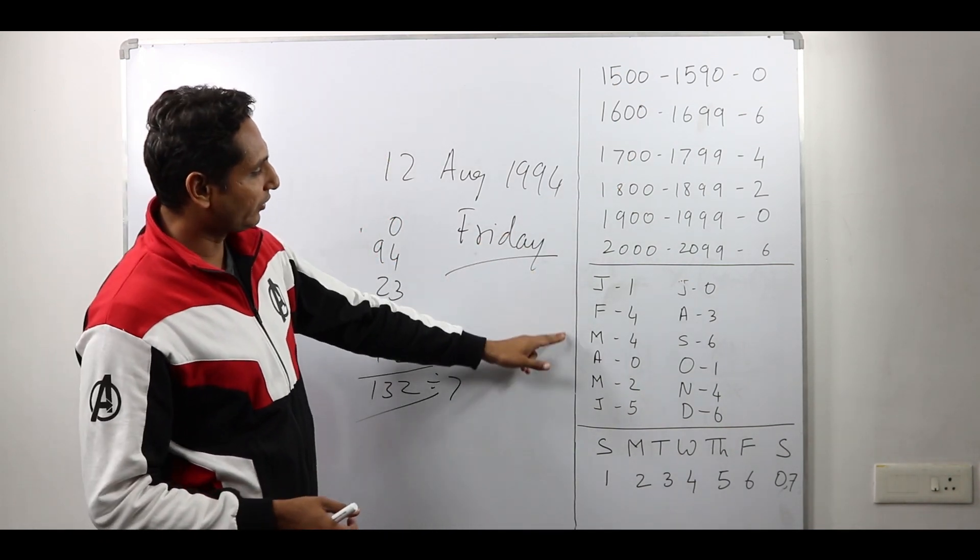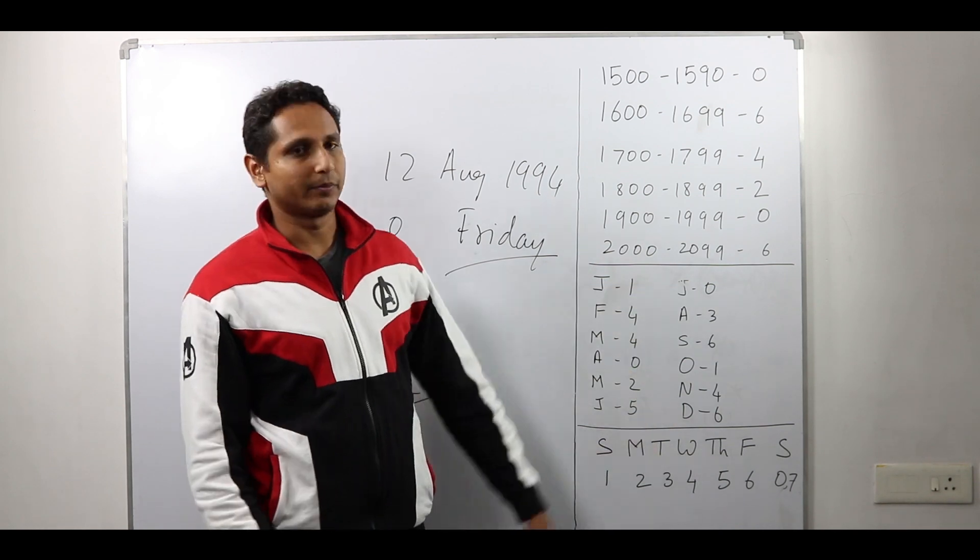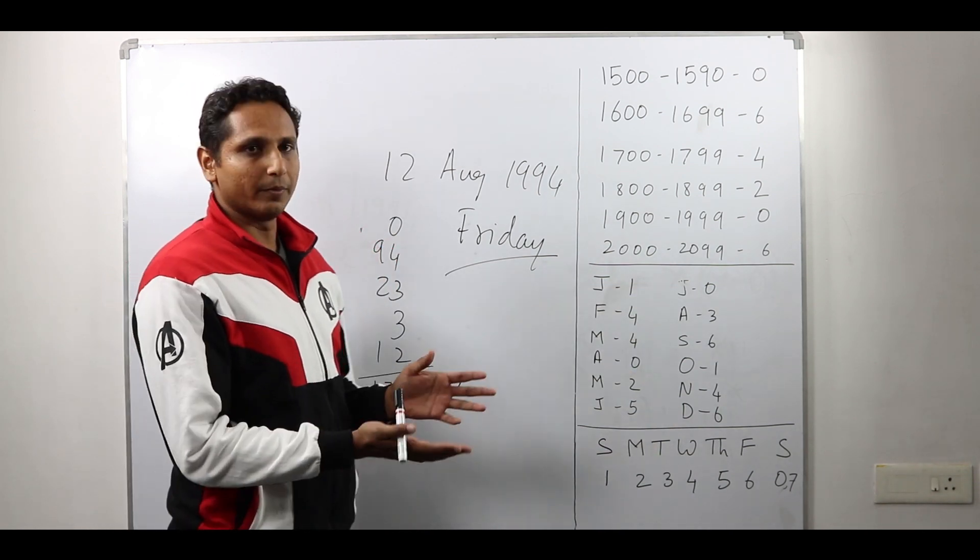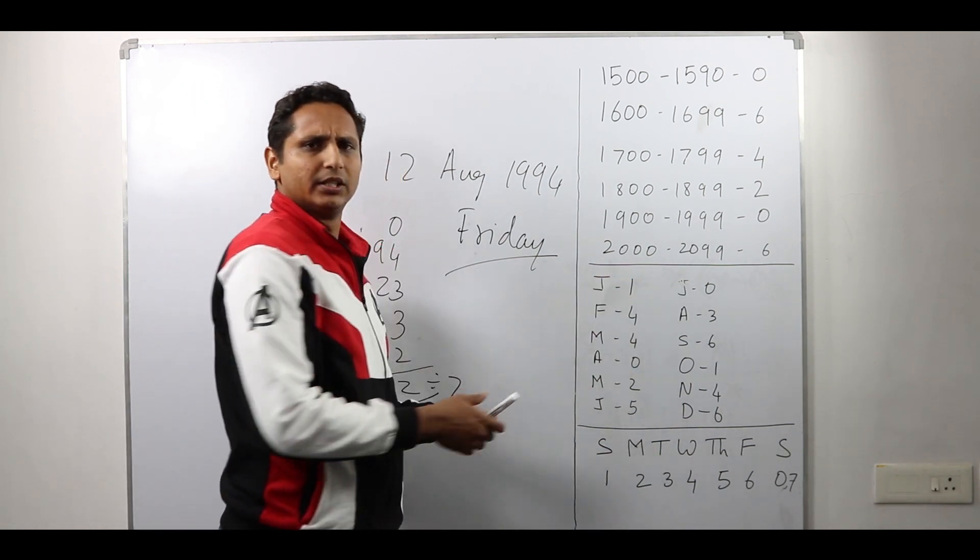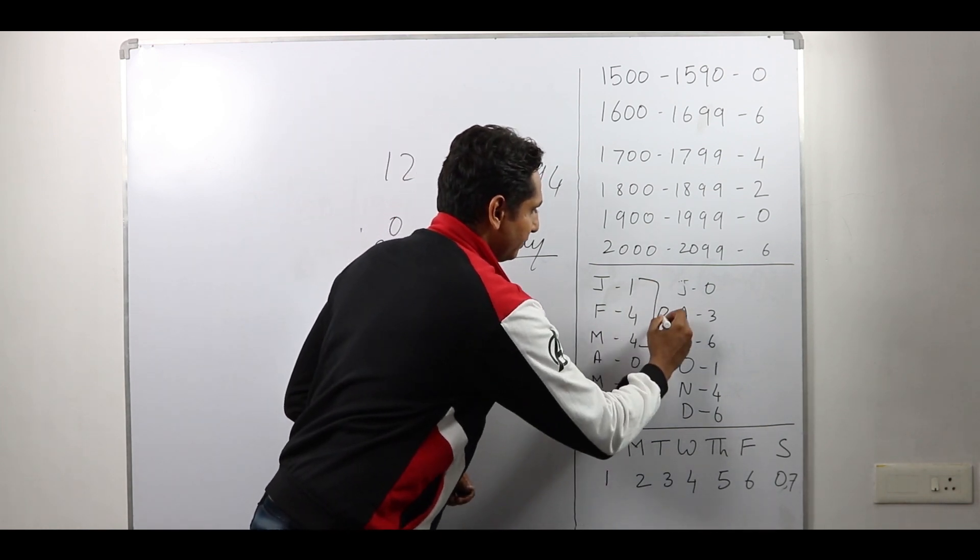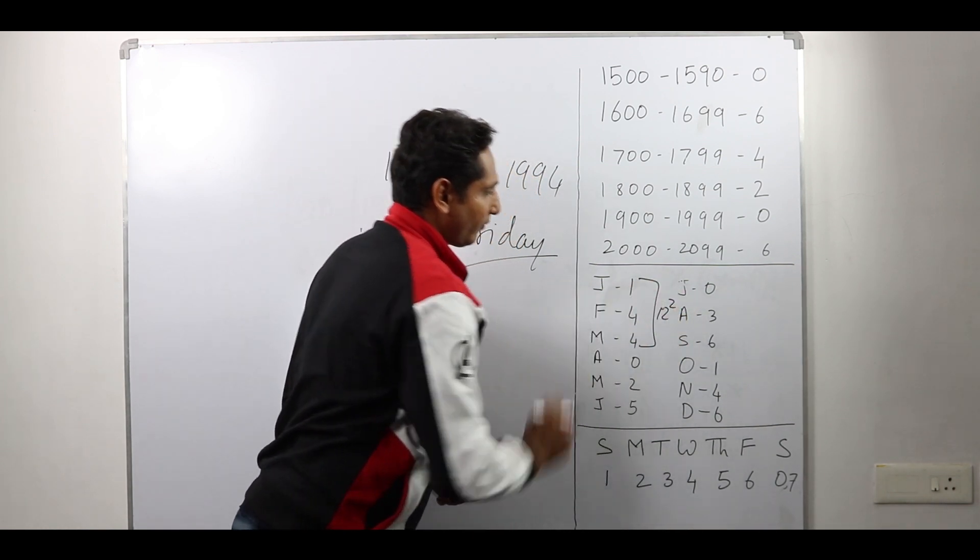Next is the months. January, February, March, April, May, June, July, August, September, October, November, December. How do I remember this? So 144 is 12 square.